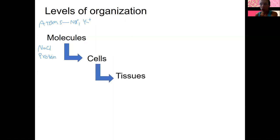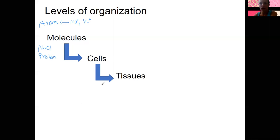Cells are individual units of life that then come together in multicellular organisms and work together, and the next thing they form is tissues. Tissues are groups of cells — either one cell type or more than one cell type — that have related functions and work together to do something. Tissues also have extracellular material as well, such as other proteins or liquids, and that's really variable depending on what tissue type we're talking about.